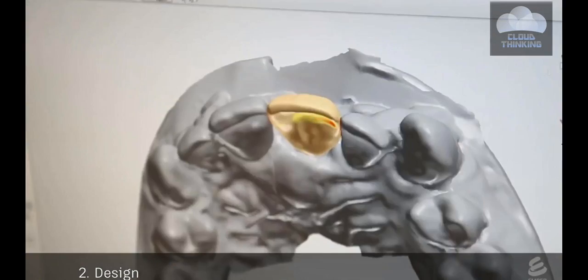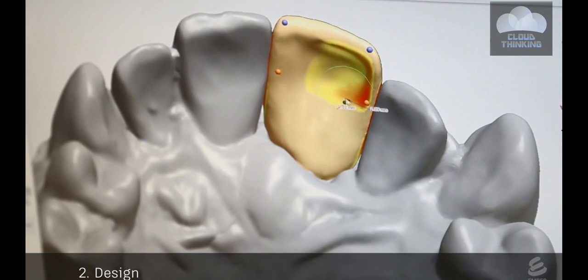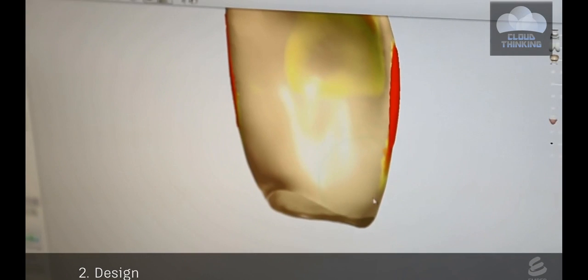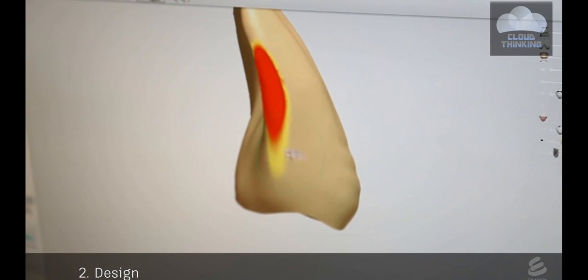The red regions indicate occlusions. This is where the model would collide with other teeth. The technician pushes and pulls on the mesh to make sure the tooth will fit.